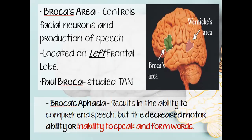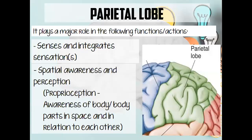The second lobe is your parietal lobe. The parietal lobe plays a major role in our senses. It processes information from the sense of touch, including pressure, temperature, and pain. We also have the term proprioception, which is the awareness of body parts in space and in relation to each other. That's why even if we are closing our eyes, we know where our hand is located, where our right and left hand is, where our feet are — we know it because of proprioception.